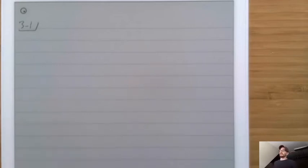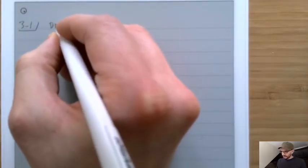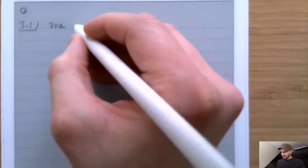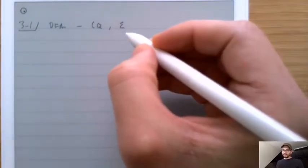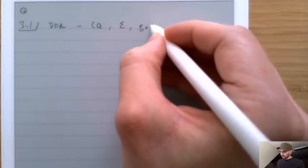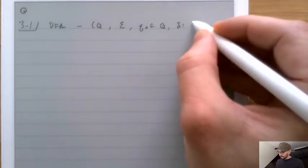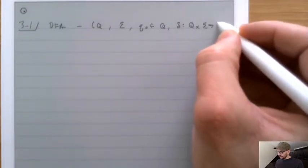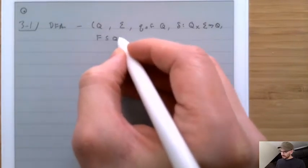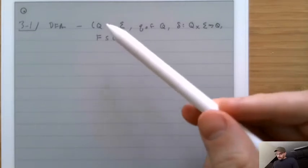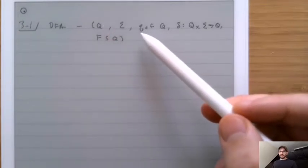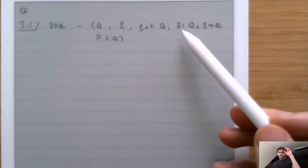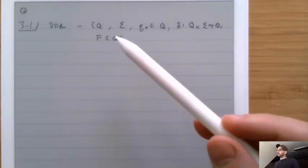Last time we introduced the idea of a DFA — Deterministic Finite Automata — which are made up of five components: Q, a set of states; sigma, an alphabet; Q0, a member of Q; delta, a function from Q cross sigma to Q; and F, a subset of Q. We often draw these as a graph where Q are the nodes, Q0 has an edge coming from off the graph, the edges represent delta, and F are nodes with two circles.